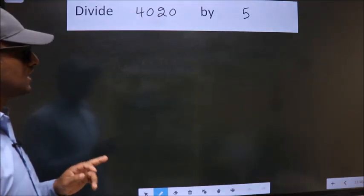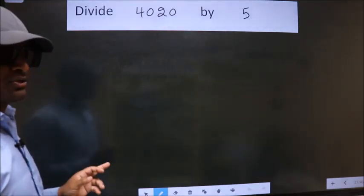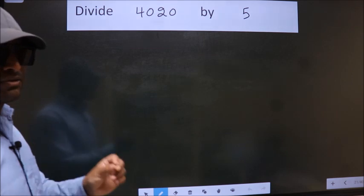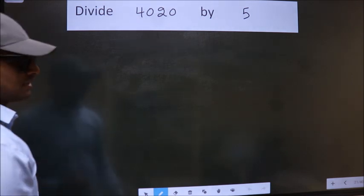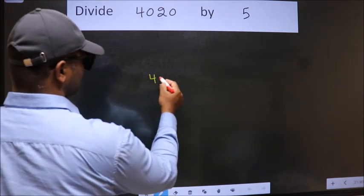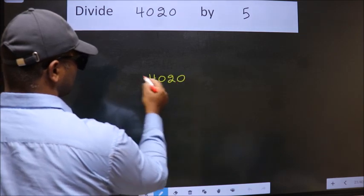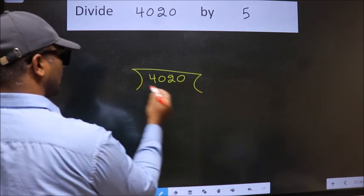Divide 4020 by 5. To do this division, we should frame it in this way. 4020 here, 5 here.